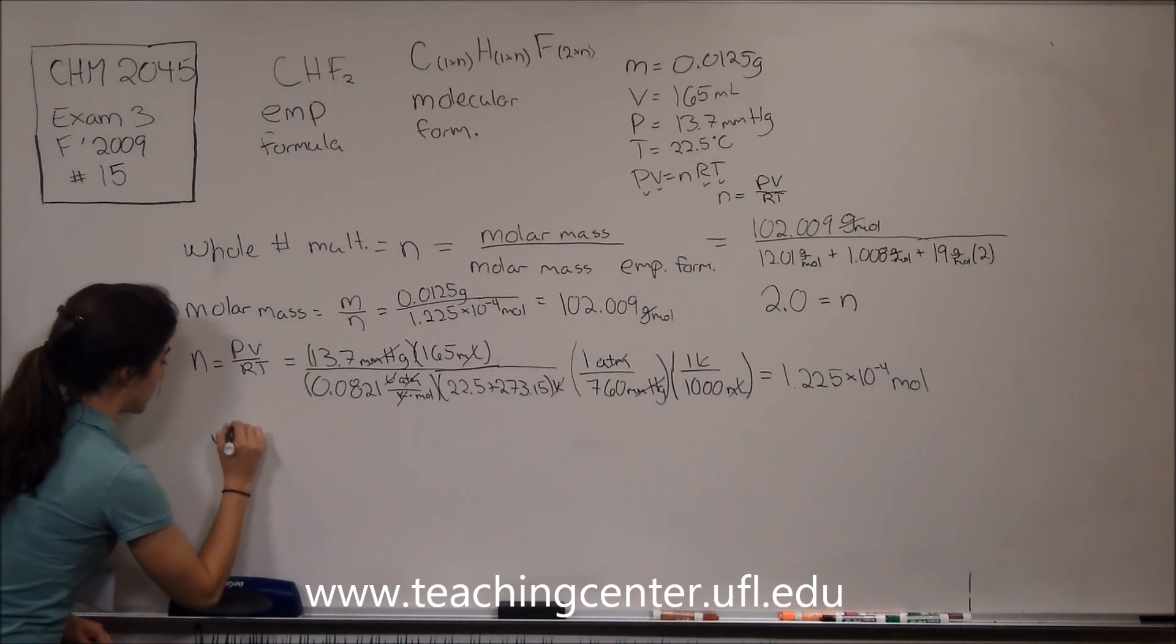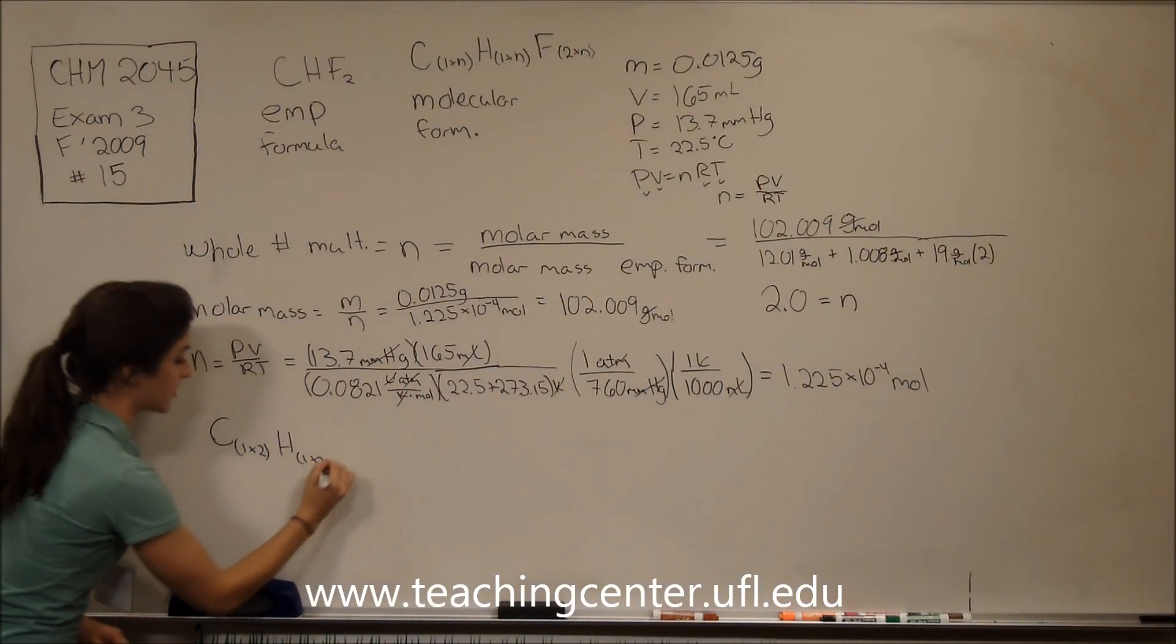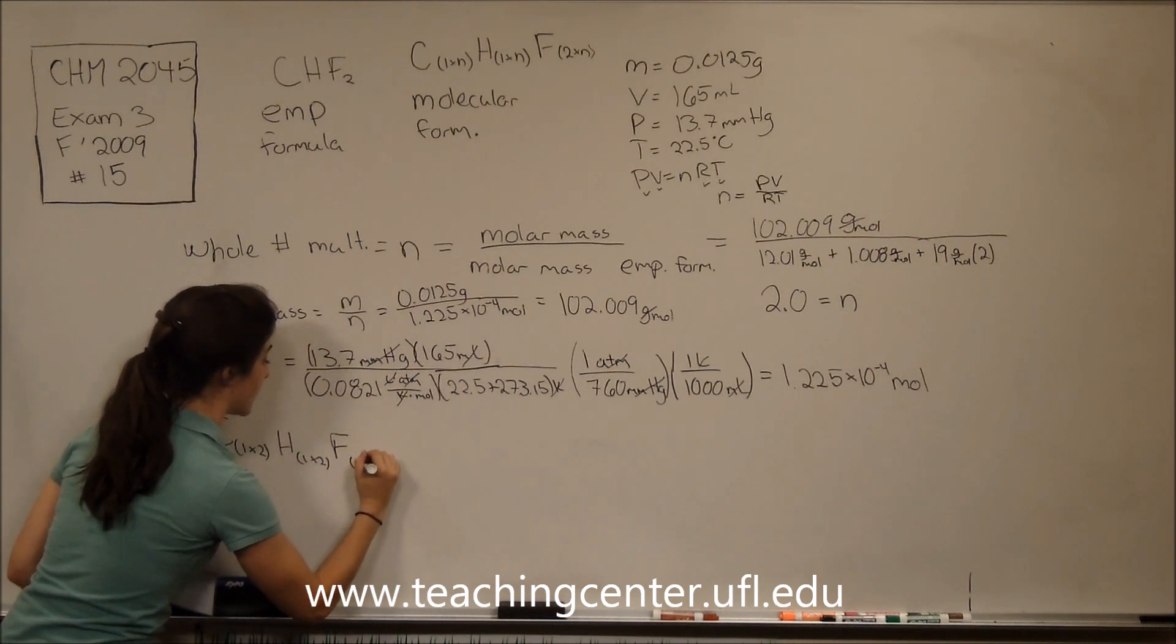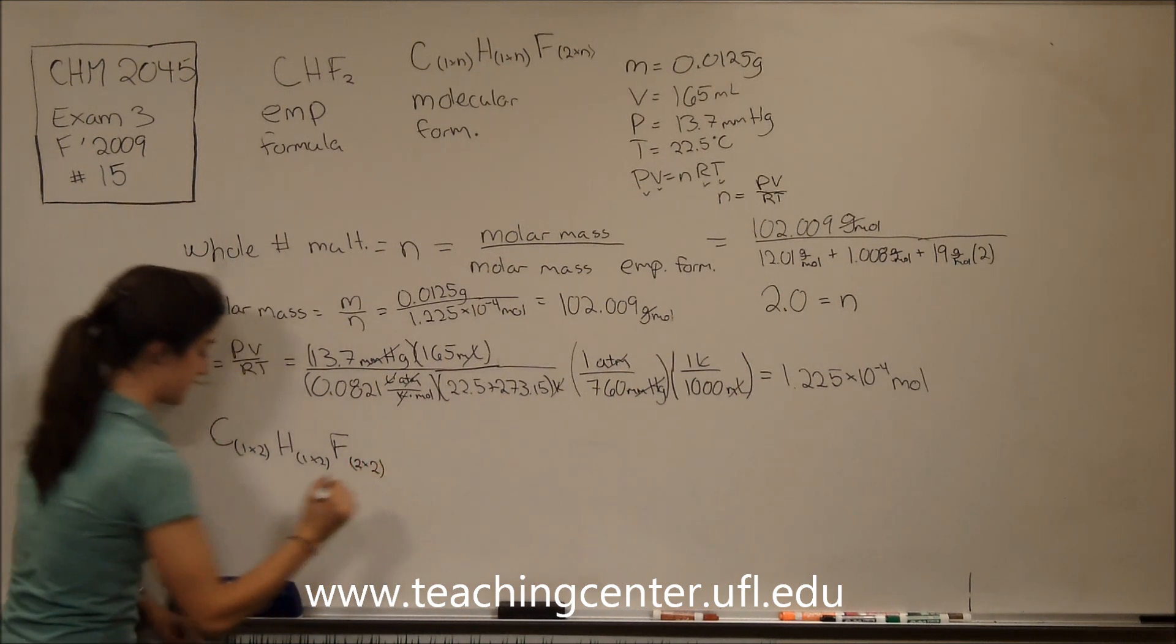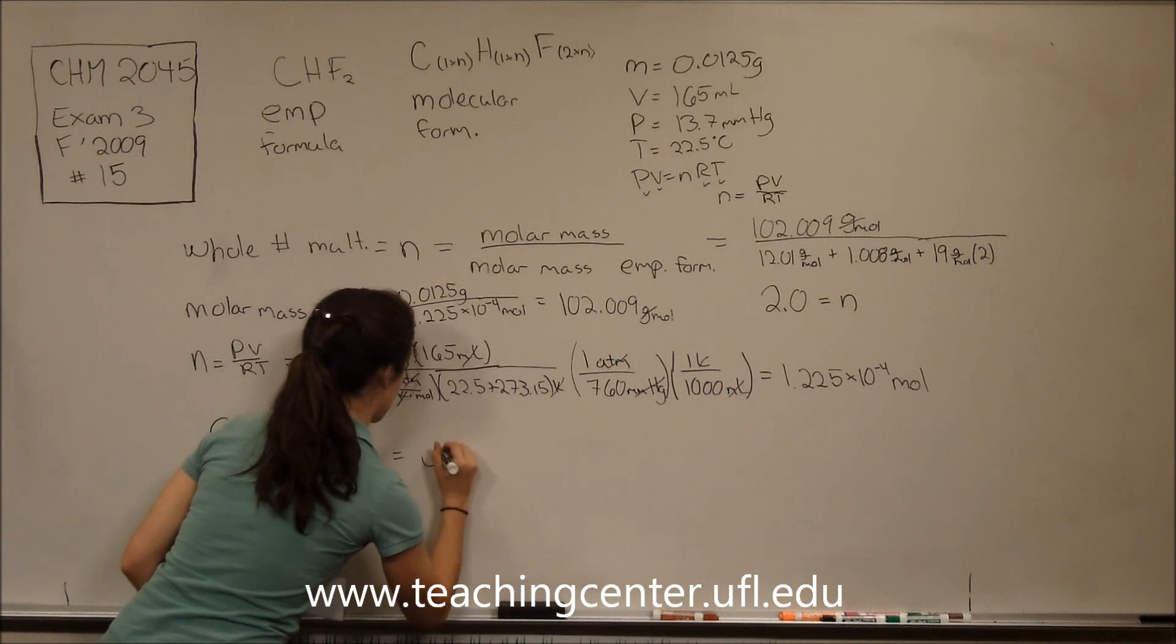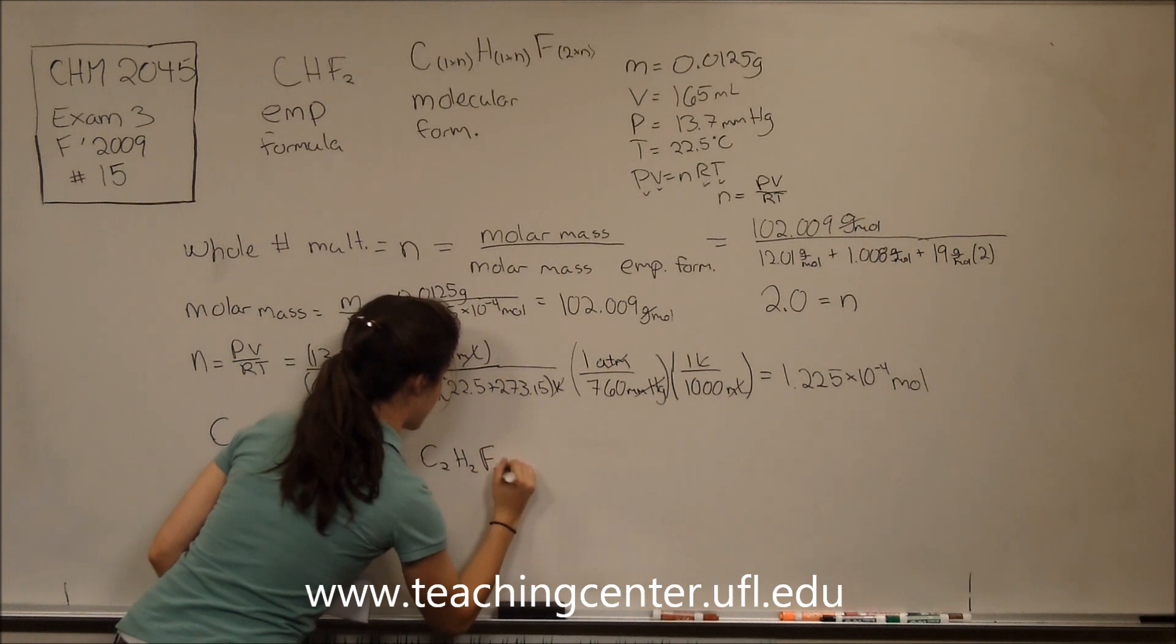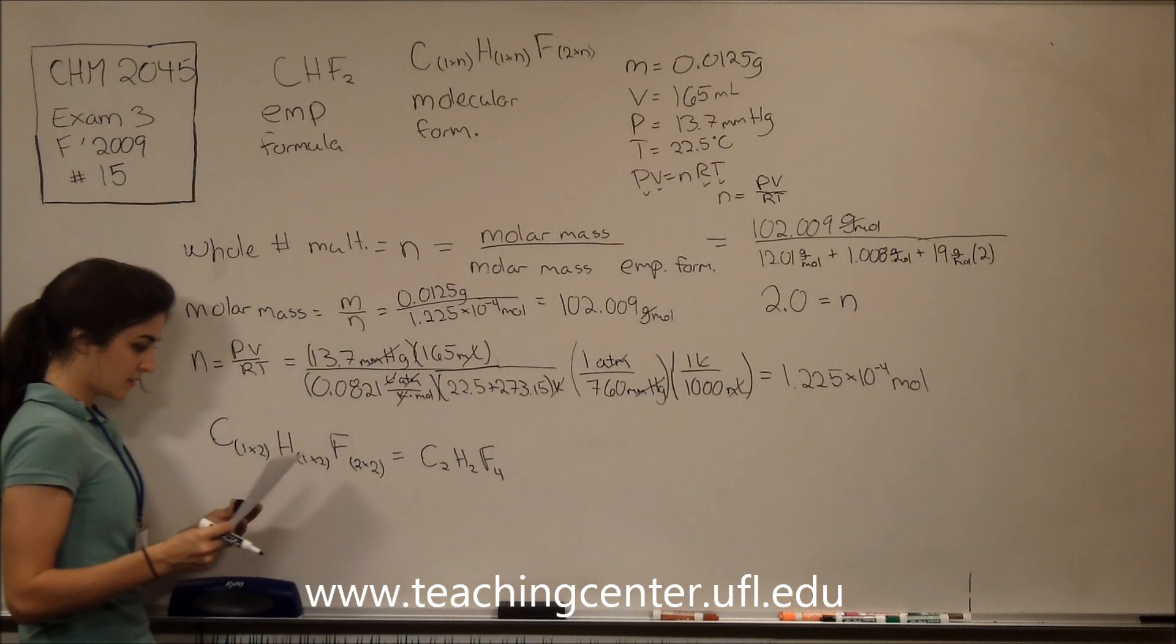So we can plug that into our molecular formula up here. And we'll have carbon with 1 times 2.0, hydrogen with 1 times 2.0, and fluorine with 2 times 2.0. So calculating that, we have C2H2F4, and this is answer choice B.